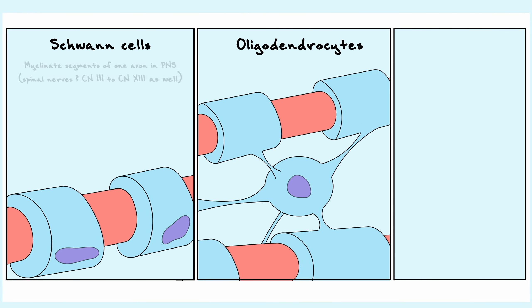Schwann cells myelinate individual segments of the axon in the peripheral nervous system, as well as the spinal nerves and the cranial nerves 3 to 12.